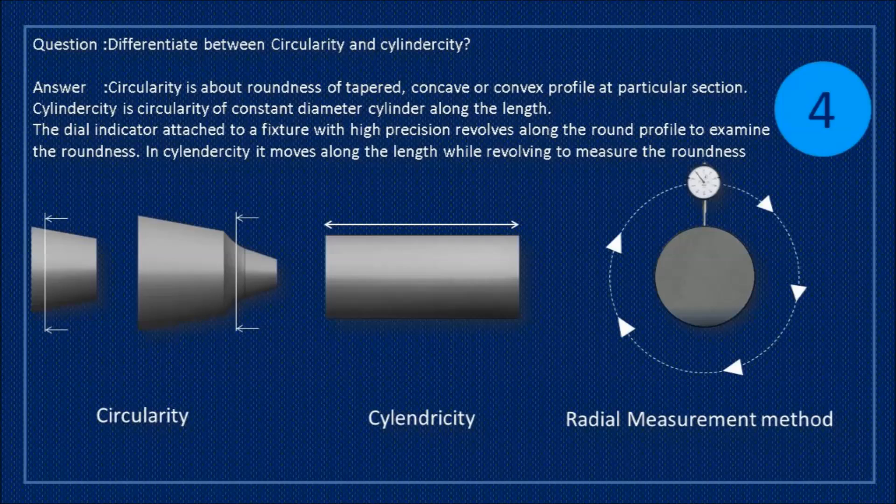The dial indicator attached to a fixture with high precision revolves along the round profile to examine the roundness. In cylindricity it moves along the length while revolving to measure the roundness.